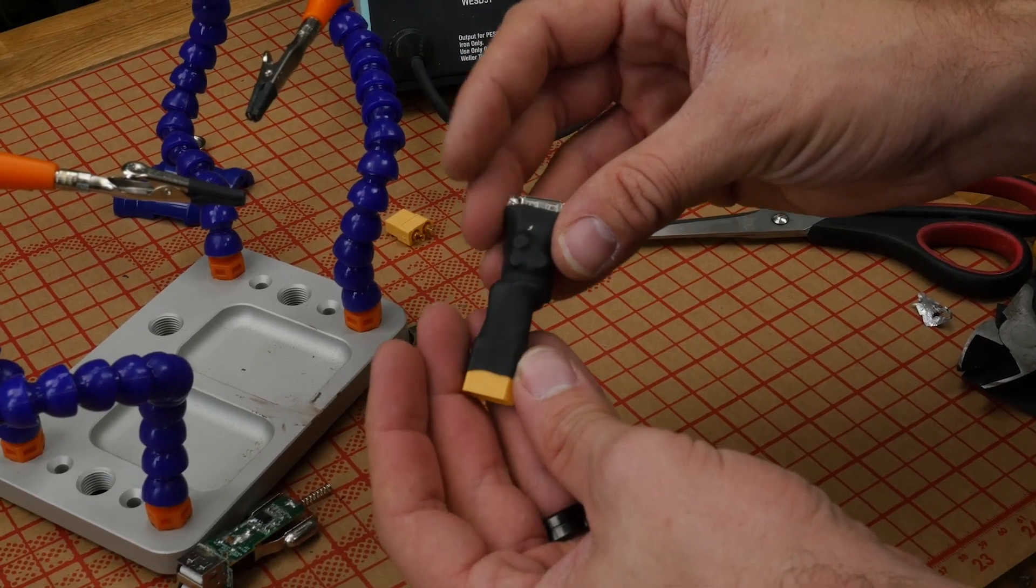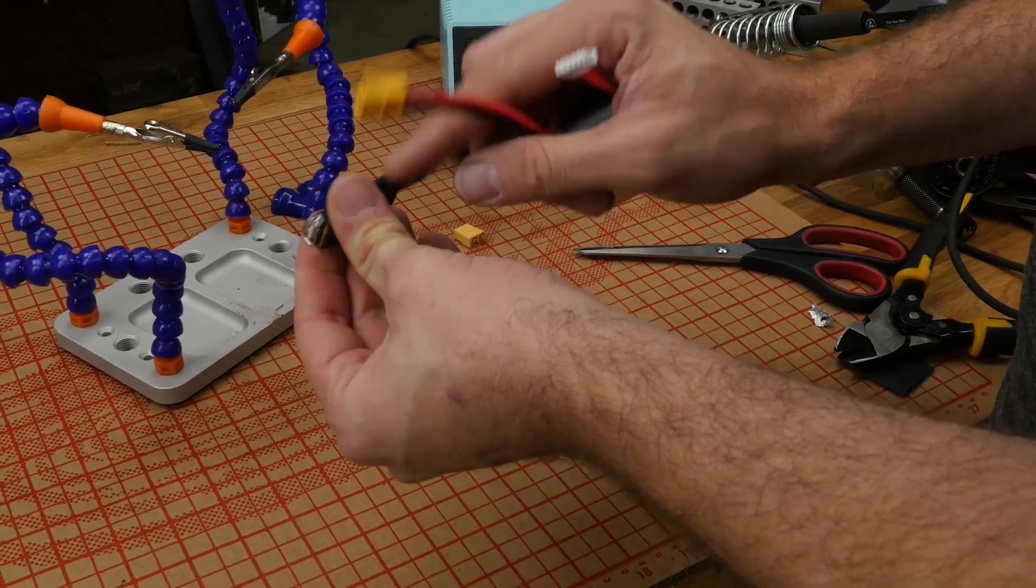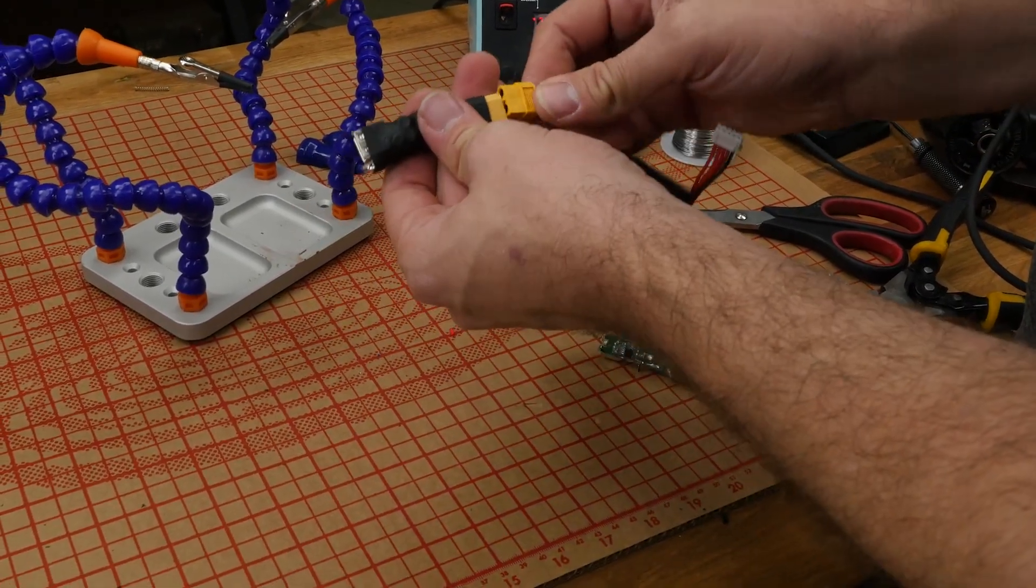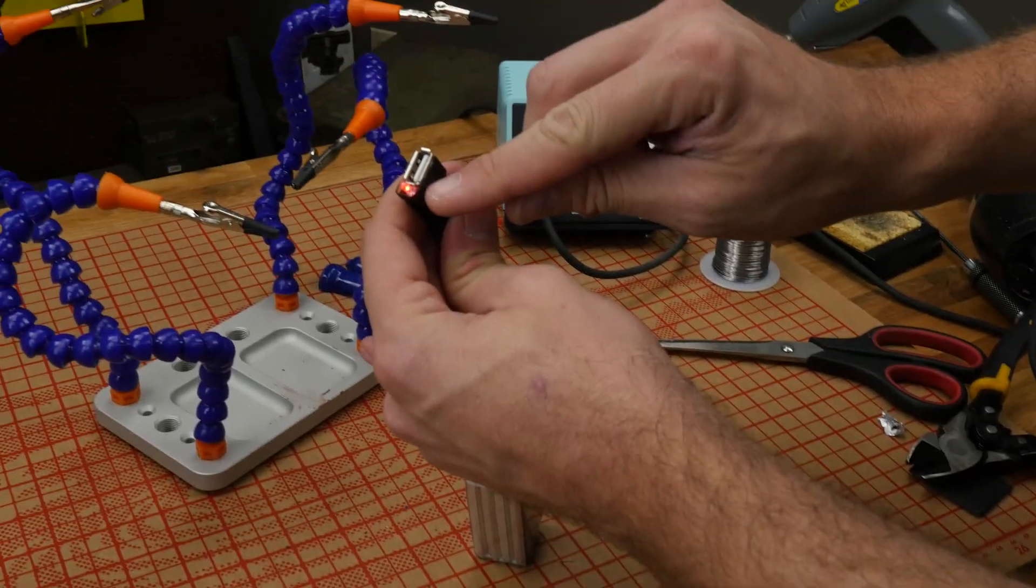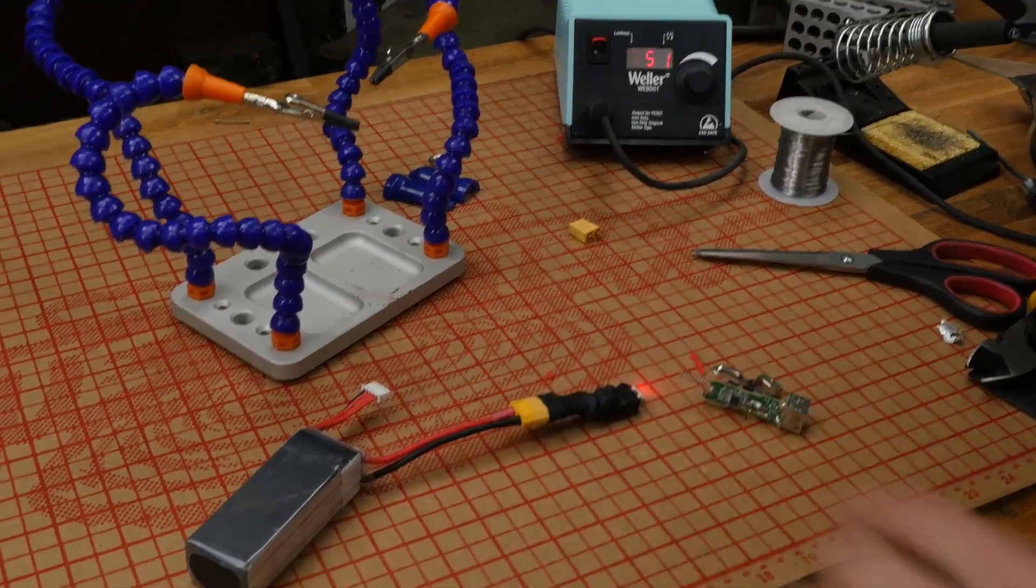And we're ready to test it out. So we have our heat shrink on. We have a nice wiggle factor so it won't strain the board. Let's go ahead and plug this in. Our little LED light comes on. Let's charge my phone.